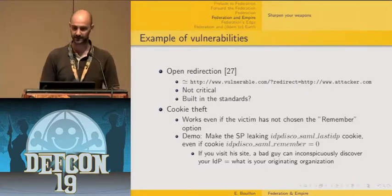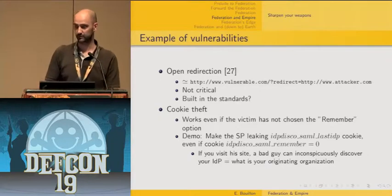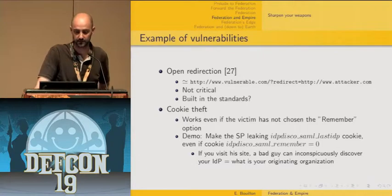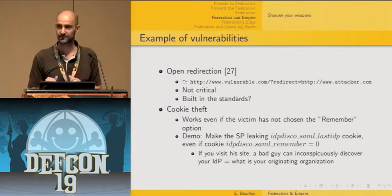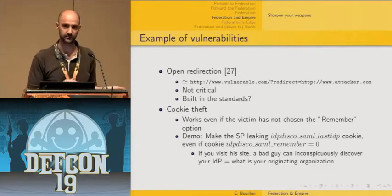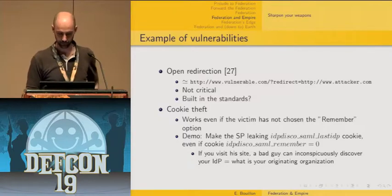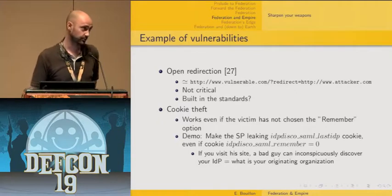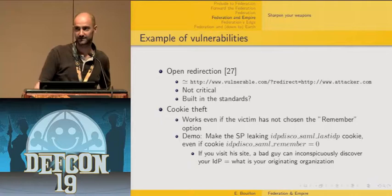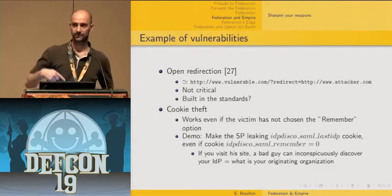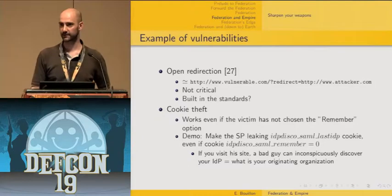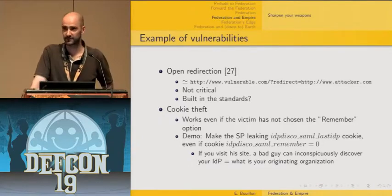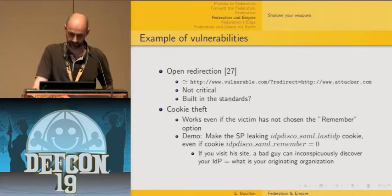I've chosen two results to illustrate these tools — two vulnerabilities that are more related to the standard and specifications themselves than to implementation. The first is an open redirection: you craft a request so the target responds with a redirection to another site controlled by the attacker. It's not critical on its own, but it's somehow built into the SAML standards. Then I'll illustrate how this can lead to a cookie theft — making cookies fly between DNS domains using these vulnerabilities.